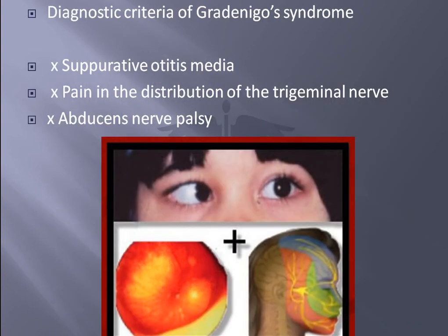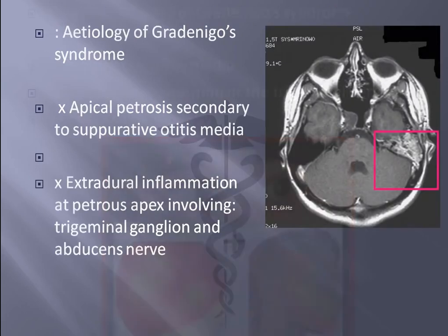What is the diagnostic criteria for Gradinego syndrome? First is suppurative otitis media, second is pain in the distribution of the trigeminal nerve such as retro-orbital pain, and third is abducent nerve palsy causing diplopia in the patient.